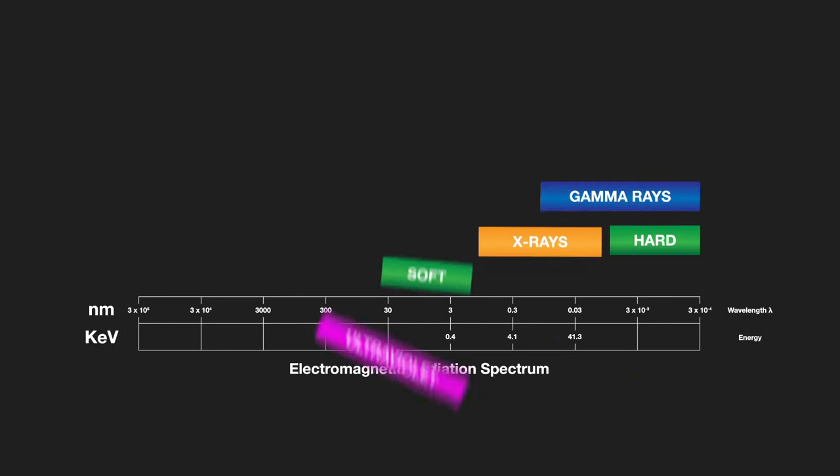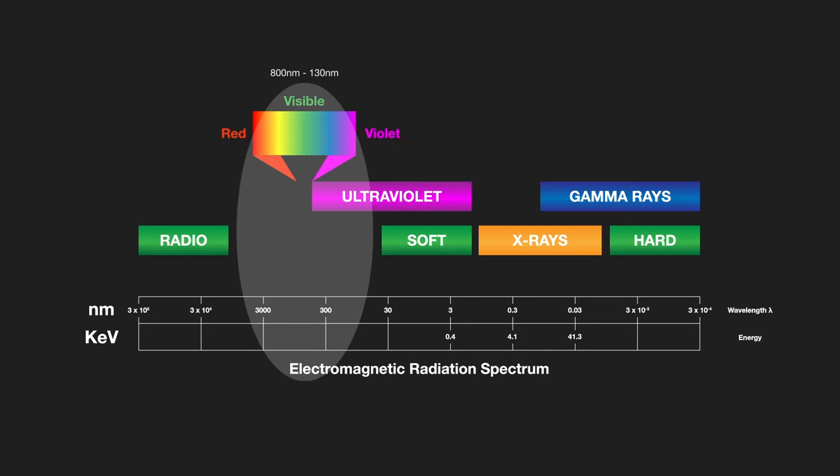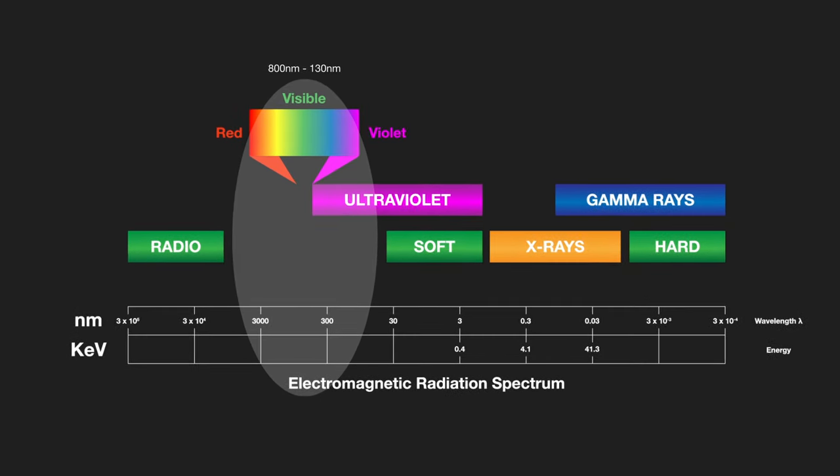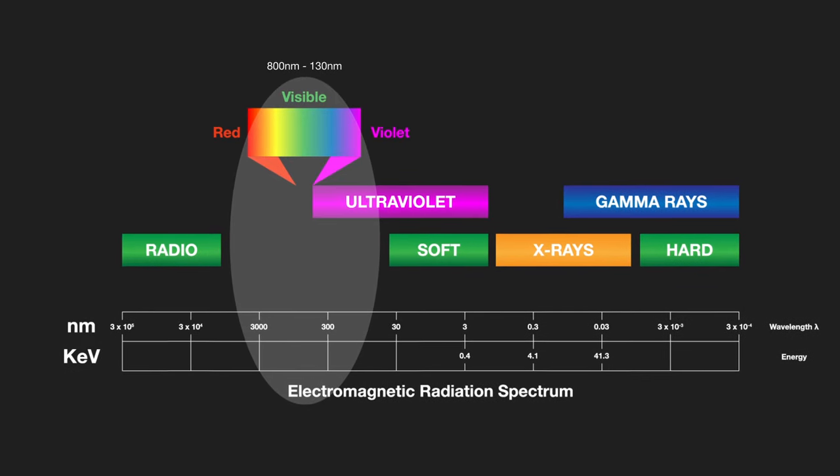The part of the electromagnetic spectrum which is used by OES includes the visible spectrum and part of the ultraviolet spectrum. In terms of wavelengths, that's from 130 nm up to around 800 nm.